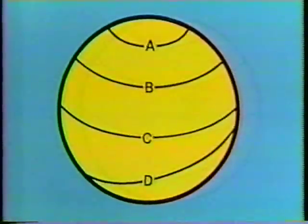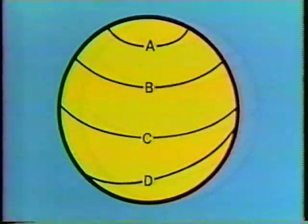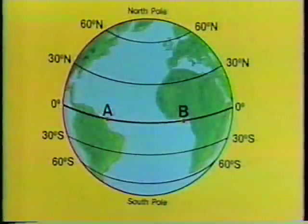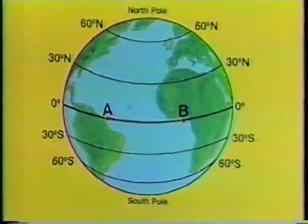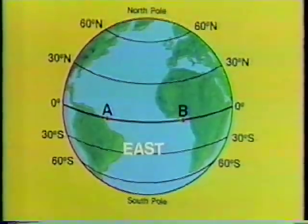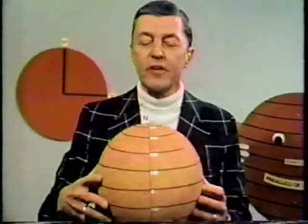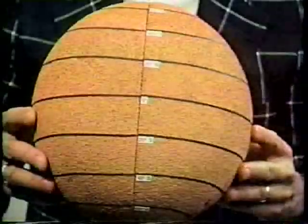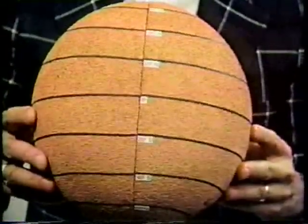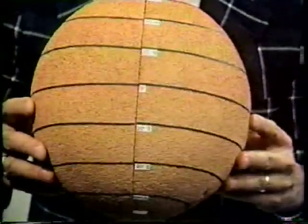Now, let's see if you've been listening. Which of these circular lines is not parallel to the others? D is correct. If you travel from point A to point B, what direction would you be going? East is the answer we want. No wonder we sometimes call these parallels that circle our Earth east-west lines. But the lines may not always appear circular — if we're looking directly down at the equator, the parallels appear as straight east-west lines.